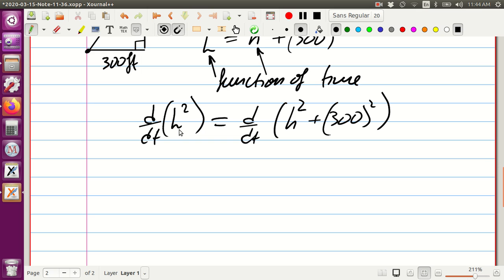Derivative of L - again, L is not just a variable, it's a function. Therefore, we have to use the chain rule. The chain rule says take two, put it down, multiply by L, and then multiply by the derivative of L. So the derivative of L with notation will be dL/dt.